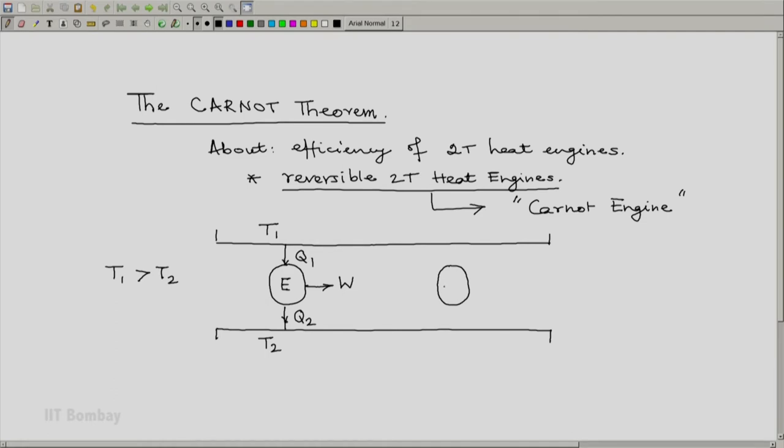The other one is a reversible engine working between the same two reservoirs. Let it absorb heat Q1R from the high temperature reservoir, let it reject heat Q2R to the low temperature reservoir and let it produce work WR.